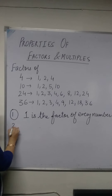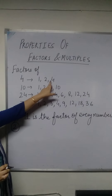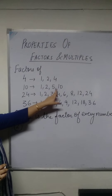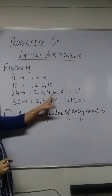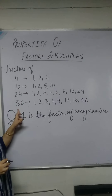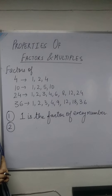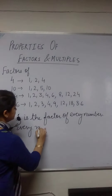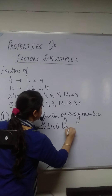Secondly, if you look for the factors of 4, the number itself is appearing in the factors. For 10, 10 is also there in its factors. For 24, 24 is a factor of 24. And 36 is also a factor of 36. So the second property we can have: every number is the factor of itself.